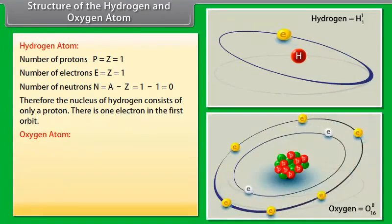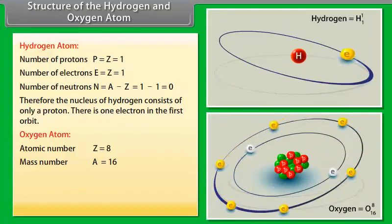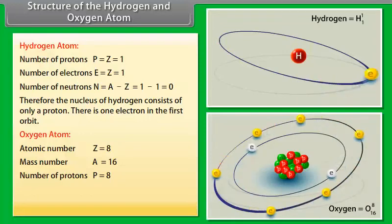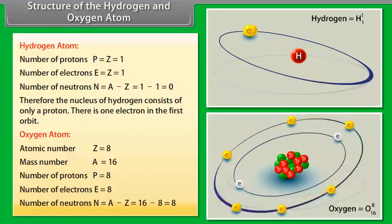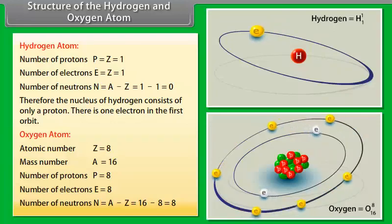Oxygen Atom: Atomic Number Z is equal to 8. Mass Number A is equal to 16. Number of Protons P is equal to 8. Number of Electrons E is equal to 8. Number of Neutrons N is equal to A minus Z, which equals 16 minus 8, which is equal to 8.